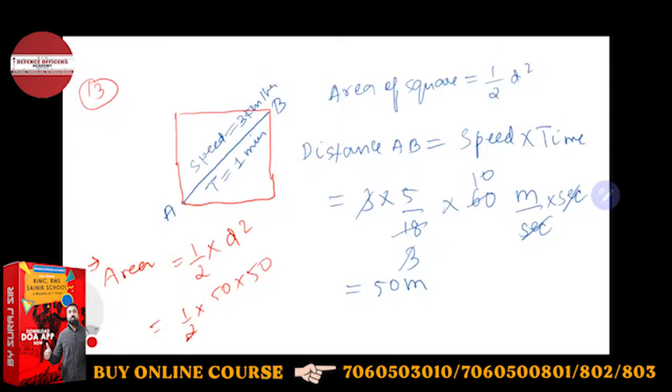So this will be 225 times 25, 5 is 125, so 1250 meter square is the right answer.